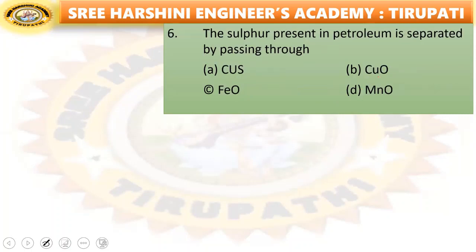Next: the sulfur present in petroleum is separated by passing through — CuS, CuO, FeO, or MnO? Option B — CuO — is the right answer.